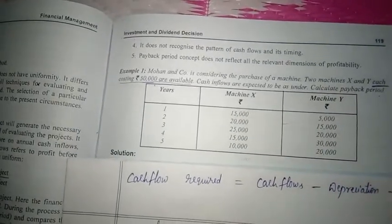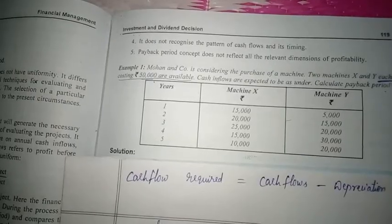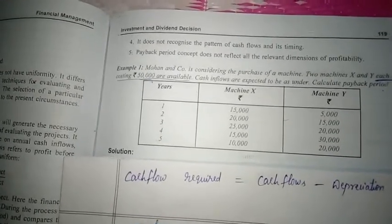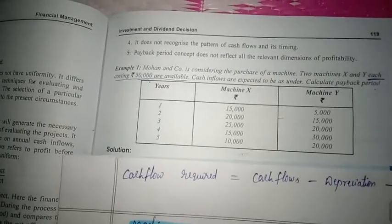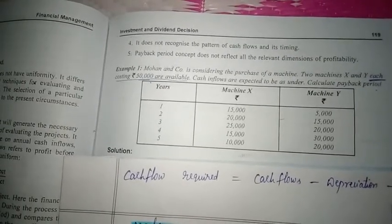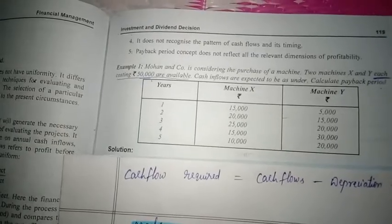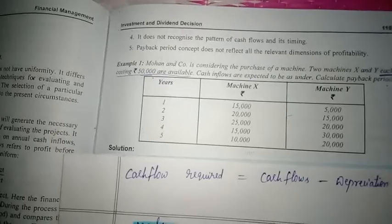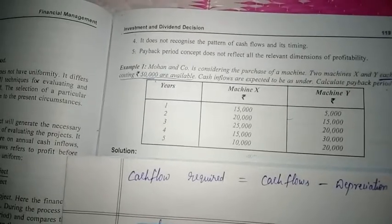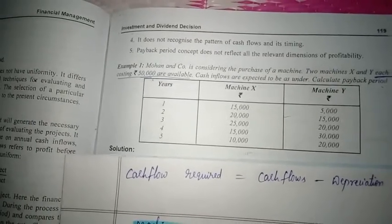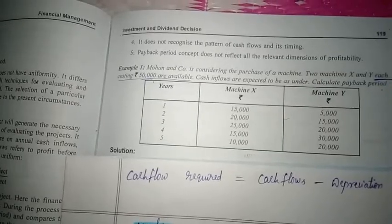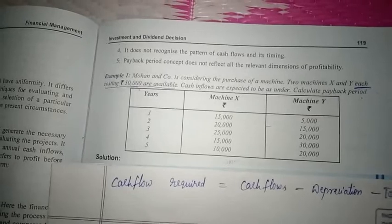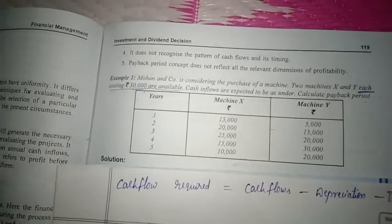Mohanand company is considering to purchase machinery. Two alternatives are available: machine X and machine Y. Out of these two, the company has to select one. To select either machine X or machine Y, the company has to calculate the payback period, and based on the payback period, the company will decide which machine to choose.